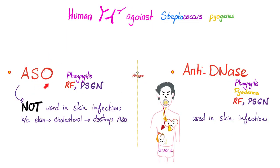To recap: ASO antibodies can be used to diagnose pharyngitis, rheumatic fever, and many cases of streptococcal nephritic syndrome known as post-streptococcal glomerulonephritis. But we do not use ASO to diagnose skin infections such as pyoderma, necrotizing fasciitis, cellulitis, or erysipelas, because skin disease equals lipids and cholesterol which inhibit Streptolysin O.